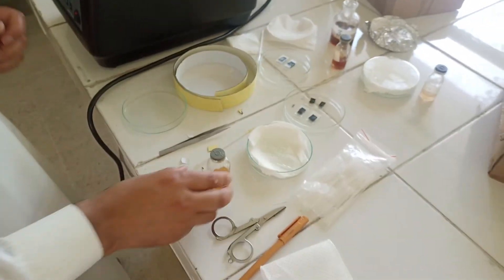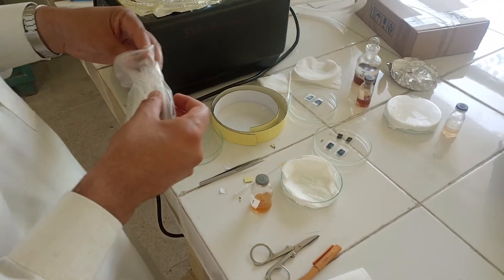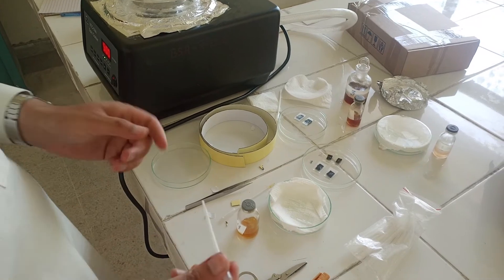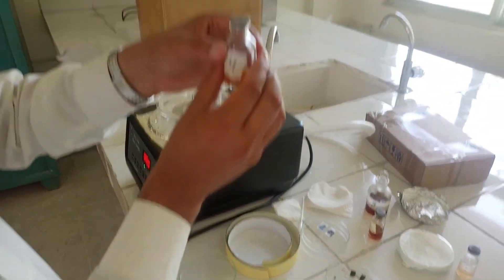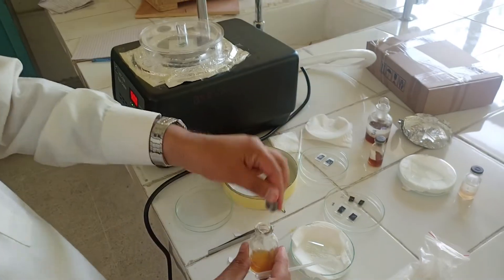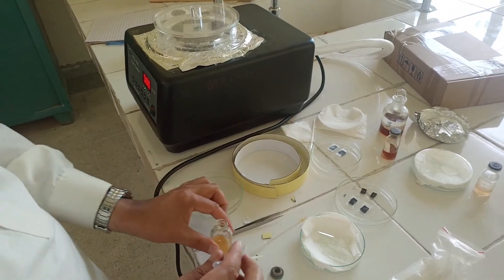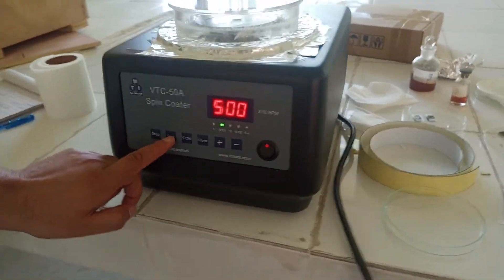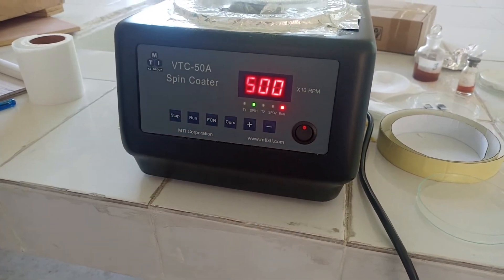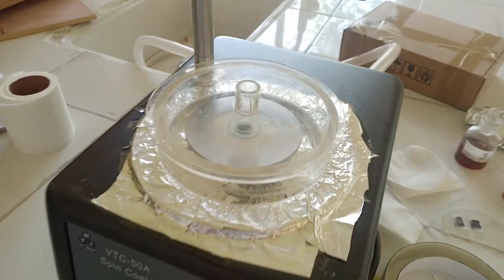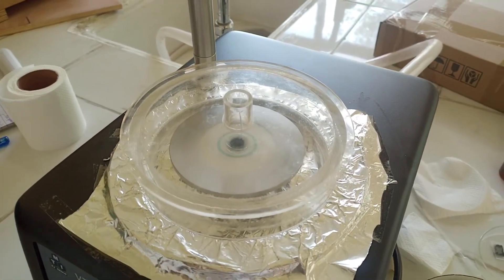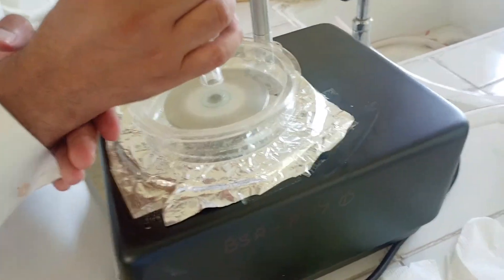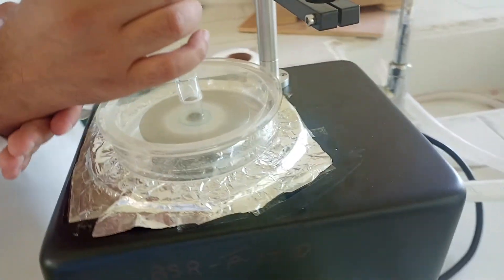Now when we start, we will take a dropper. It is our disposable dropper and here we have a solution. So before taking our solution and dropper, we will start this. Here, run. Now we are going to add drop-wise. Here we will put our drops.